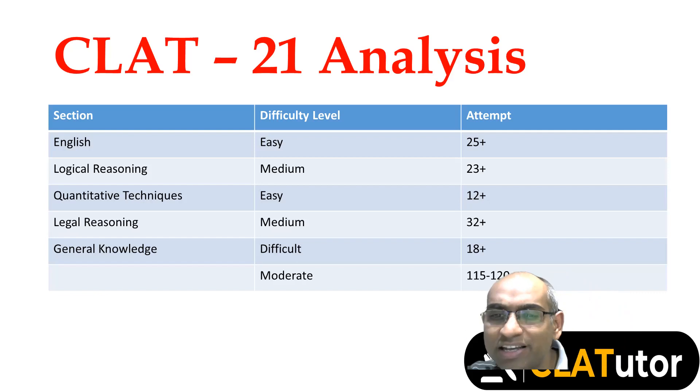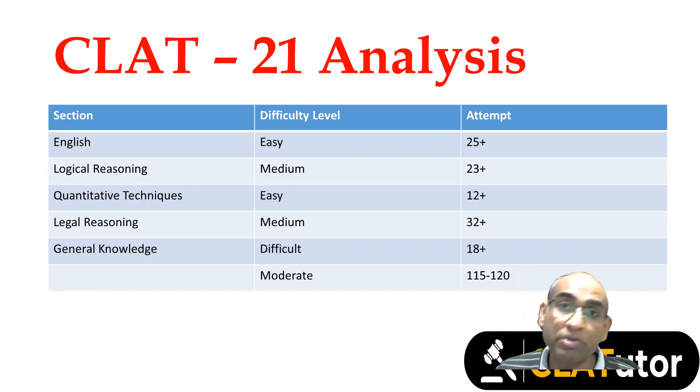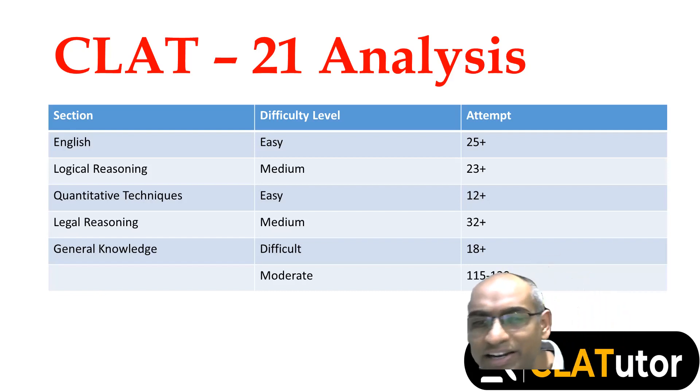So an easy section. If you've done 25 plus attempts, some of the options were very close in terms of taking a call because of the complexity of the passage, because so much of reading is required. If you've done at the start it's good, but if you've done in between the reading comprehension then it becomes slightly complex. Any attempt between 25 plus is a good attempt. If you are there at 23 also, I will suggest it's a good attempt if your accuracy is good enough.